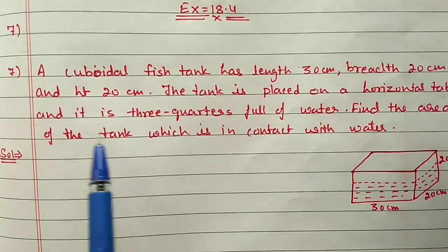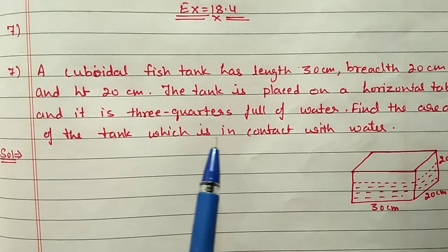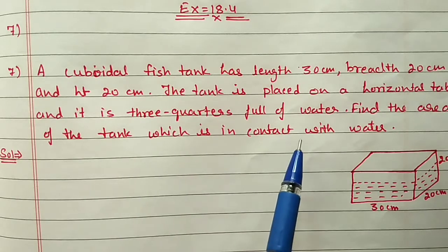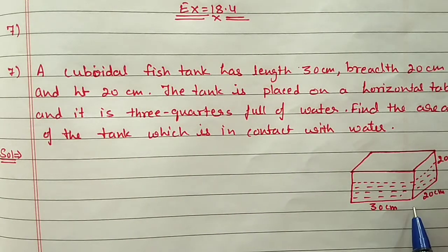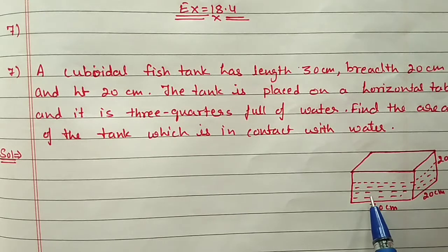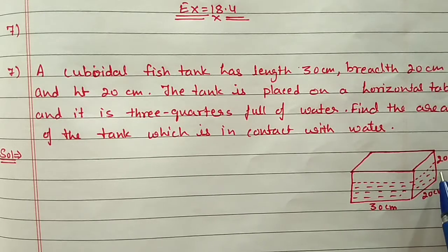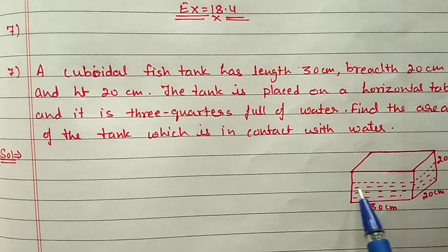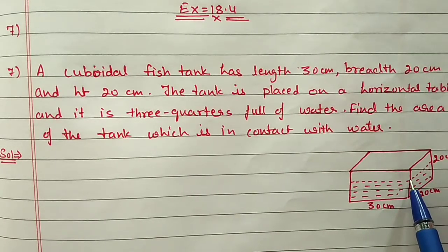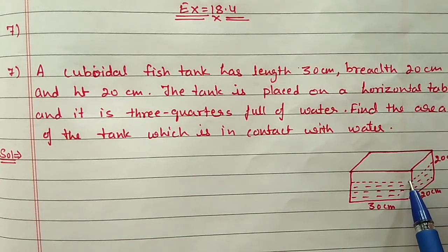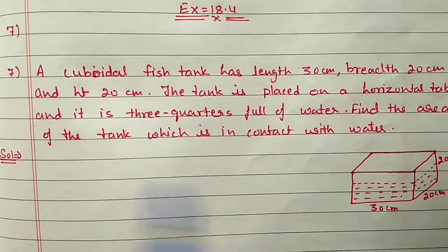Find the area of the tank which is in contact with water. In contact with water, the base is there, and along with the base, these four sides also up to the water level are in contact with water. So first we will find out the height of the water level.